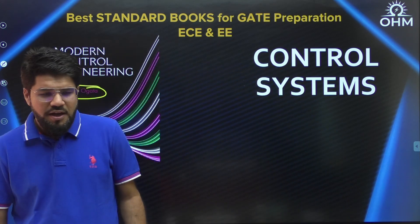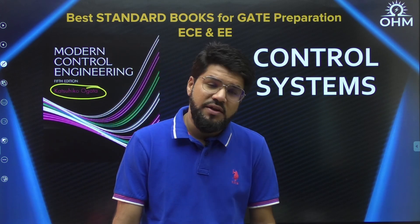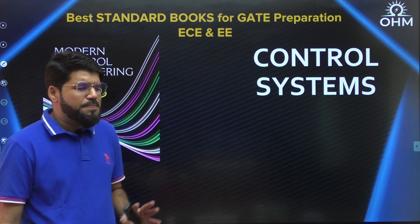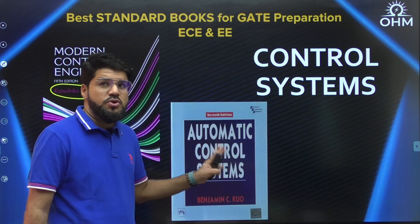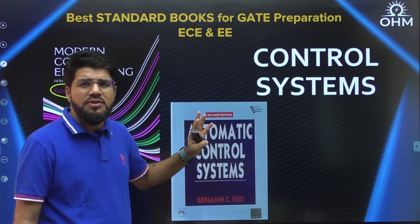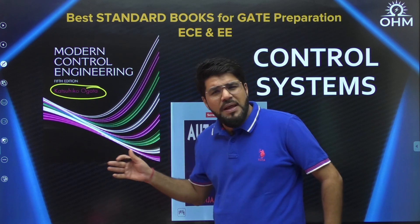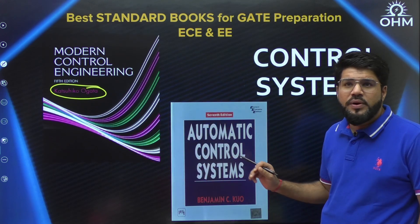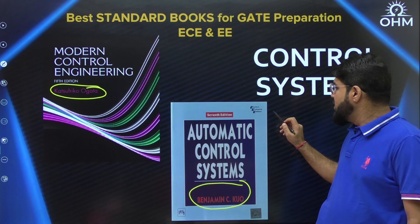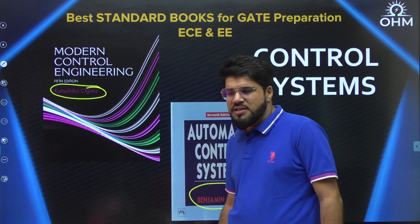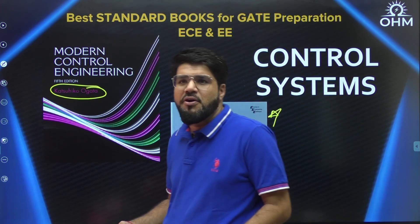A second book which again has beautiful concepts, especially for topics like Nyquist plots, error analysis, state space analysis, and root locus — the book I find very, very good is Benjamin Kuo. Not only for Nyquist, root locus, or error analysis, but it is indeed a very good book for the entire GATE syllabus. Many of the GATE previous year questions are motivated from this book — taken from examples and converted to MCQ, NAT, or MSQ format.